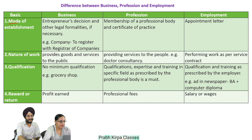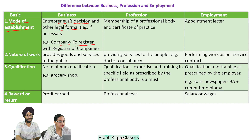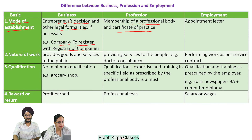Number 1: Mode of Establishment. In case of business, it is the entrepreneur who decides to set up business and he may have to comply with some legal formalities. For example, if a person wants to set up a company, he will have to register with the Registrar of Companies. In case of profession, membership of a professional body and certificate of practice is required. In case of employment, an appointment letter is issued by the employer.